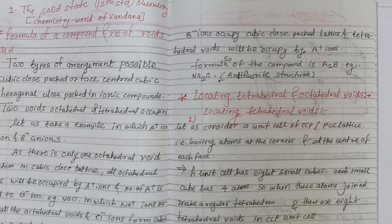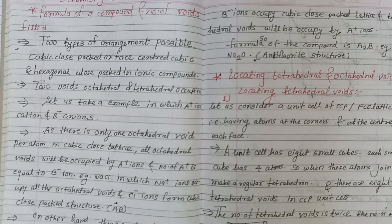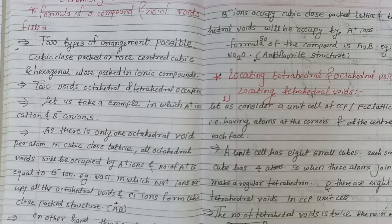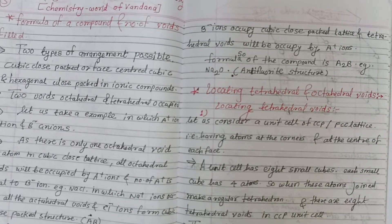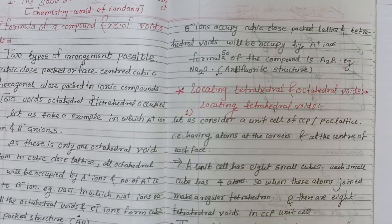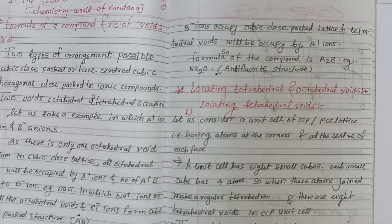Sodium oxide is also called the antifluorite structure. So this is the formula of the compound and the number of voids. We discussed two cases: one for tetrahedral voids and one for octahedral voids. For octahedral voids, the example is sodium chloride - the number of octahedral voids equals the number of atoms. For tetrahedral voids, the example is sodium oxide - tetrahedral voids are double the number of atoms. Now we will see how to locate tetrahedral and octahedral voids.